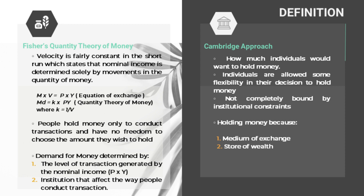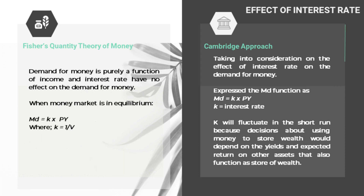The Cambridge economists ask how much individuals would want to hold in money, meaning individuals are allowed to assume flexibility in their decisions to hold money and are not completely bound by institutional constraints, such as whether they can use credit cards to make purchases or not. Individuals hold money because of two functions: first, it serves as a medium of exchange, and second, it serves as a store of wealth. The level of people's wealth also affects the demand for money, and the wealth component of money demand is proportional to nominal income — meaning the higher the nominal income, the more wealth an individual will hold.